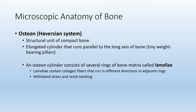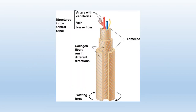Each osteon, similar to a tree, will have rings, and each of these rings is a lamella — another layer or ring. Within these lamellae, we have collagen fibers oriented perpendicular to each other to resist stress as well as twisting of the bone. Each osteon will have many lamellae or many layers of collagen fibers running perpendicular to each other. This is the structural unit of bone and allows bone to withstand stress as well as twisting.